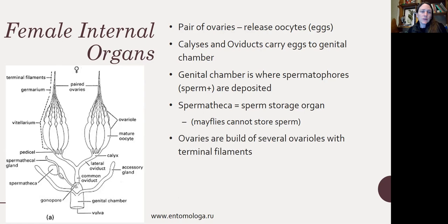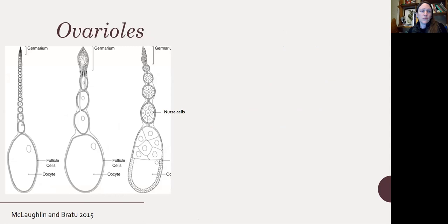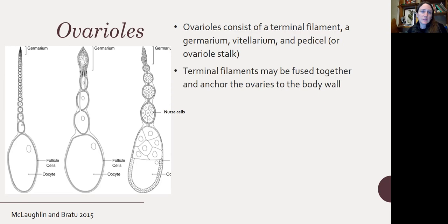Ovaries are built of several ovarioles that have long terminal filaments, and there are sometimes also accessory glands in the female reproductive organ. Those accessory glands can do things like provide protective coatings to eggs or add adhesives that help stick eggs to surfaces. The ovarioles consist of a terminal filament, which is a long stalk, then a germarium, a vitellarium, and a pedicel, which is the ovary stalk. The terminal filaments may be fused together and can anchor the ovaries to the body wall.